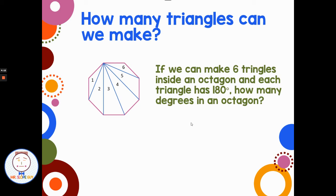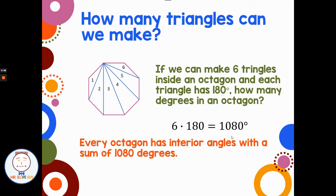So how many degrees would be in an octagon? Well, if an octagon has all those triangles each with 180 degrees, all the angles would add up to 6 times all those triangles. So 6 times 180 would give me the total interior angles of an octagon, and we get 1,080 degrees. So every octagon has interior angles with a sum of 1,080 degrees.